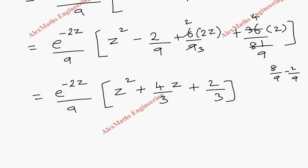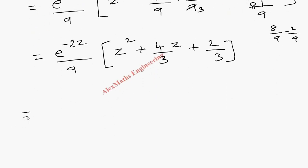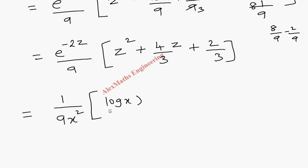Now we replace everything in terms of x. e power z becomes x, so e power minus 2z becomes x power minus 2, which we bring to the denominator as 1/x². Also, z equals log x, so z² becomes (log x)² and z becomes log x.